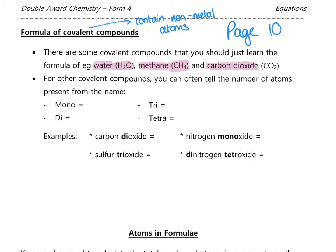Carbon dioxide is one you should know as CO₂. Ammonia, which we met in our bonding topic as a covalent bonding diagram example, has the formula NH₃. Again, you can't tell that from the name, so that's one you should learn.